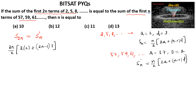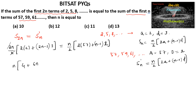So we write this as n/2 times (2×57 + (n−1)×2), which gives n/2 times (114 + 2n − 2), simplifying to n/2 times (2n + 112).